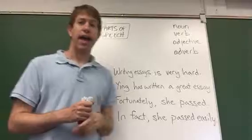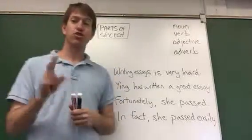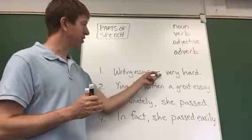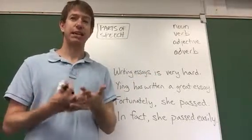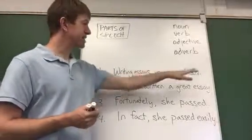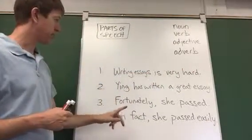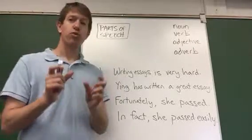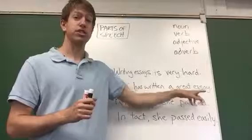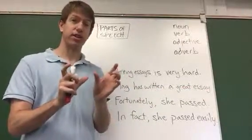Adjectives describe things, usually describing nouns. There are two main places where adjectives appear in English sentences. One place is after a linking verb like 'is' — linking verbs are like 'is,' 'seem,' or 'become.' So 'writing essays is very hard' — 'hard' is an adjective coming after the linking verb. The other place you'll see adjectives is right next to a noun, usually before the noun in English. So here we have 'a great essay' — it's saying what kind of essay it is. So we have adjective plus noun; you'll see that combination a lot.